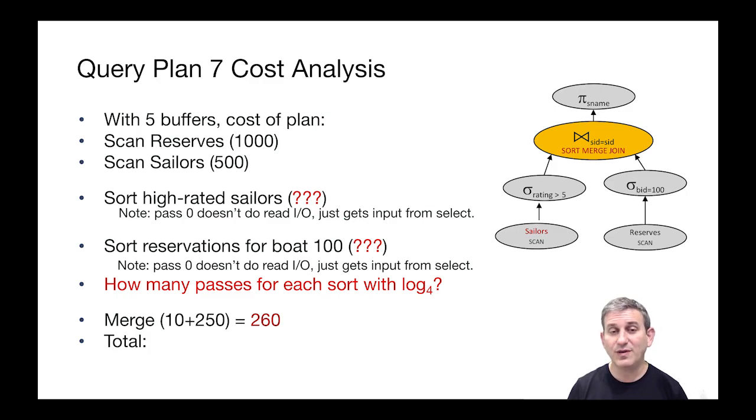So we can think about these costs where pass zero reads are free. And then the question is how many passes for each sort, given that we're going to do log base four, right? With five buffers, we get a fan in a four during merging. Let's hold off on computing that for a moment. And then the cost of the final merge is simply to read the sorted runs of sailors and the sorted runs of reserves and merge them. So that's 10 plus 250 is 260.